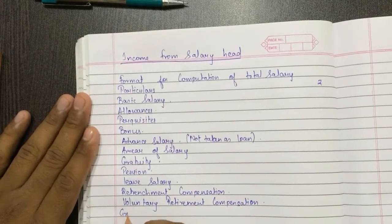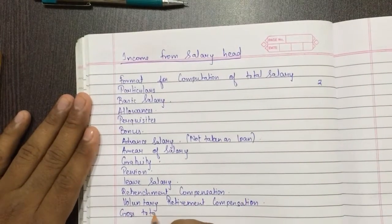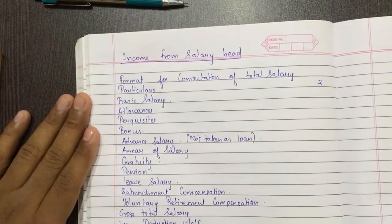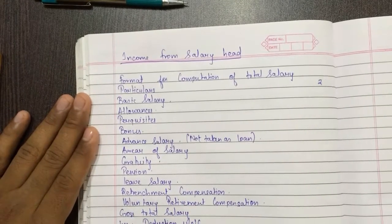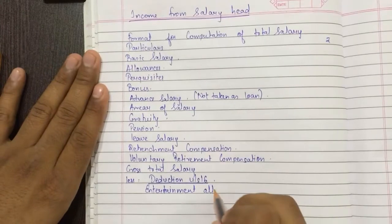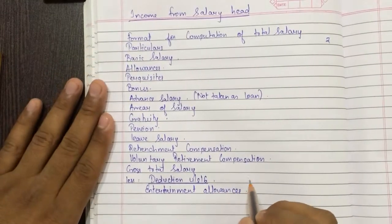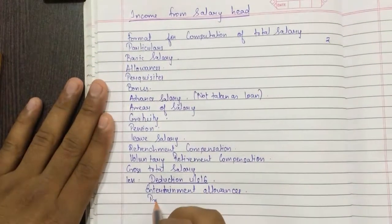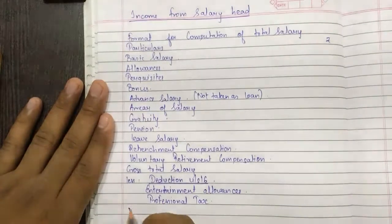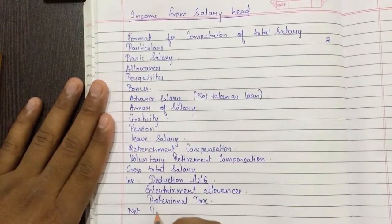From all these items we get the gross total salary. Then we deduct under Section 16 — which includes entertainment allowances and professional tax — to arrive at the net taxable salary.